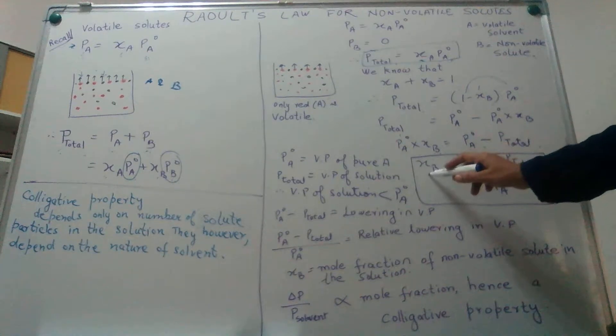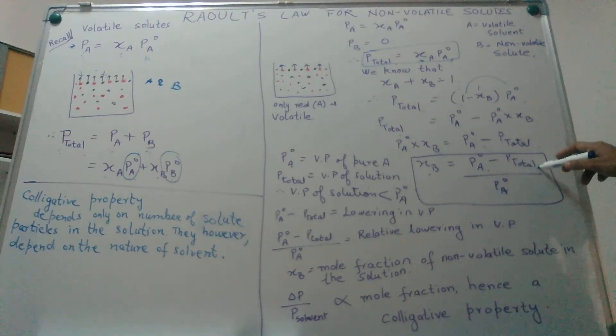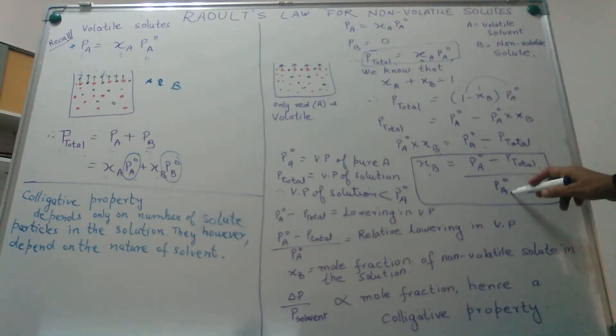So I have the mole fraction of the solute in the solution is Pa0, that is the vapor pressure of pure A, minus the vapor pressure of the solution, divided by the vapor pressure of pure A.